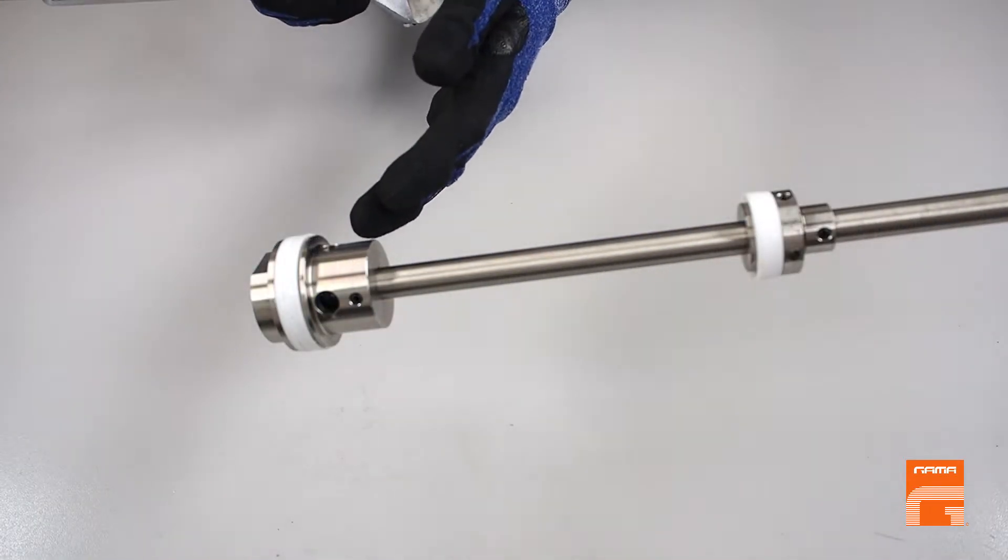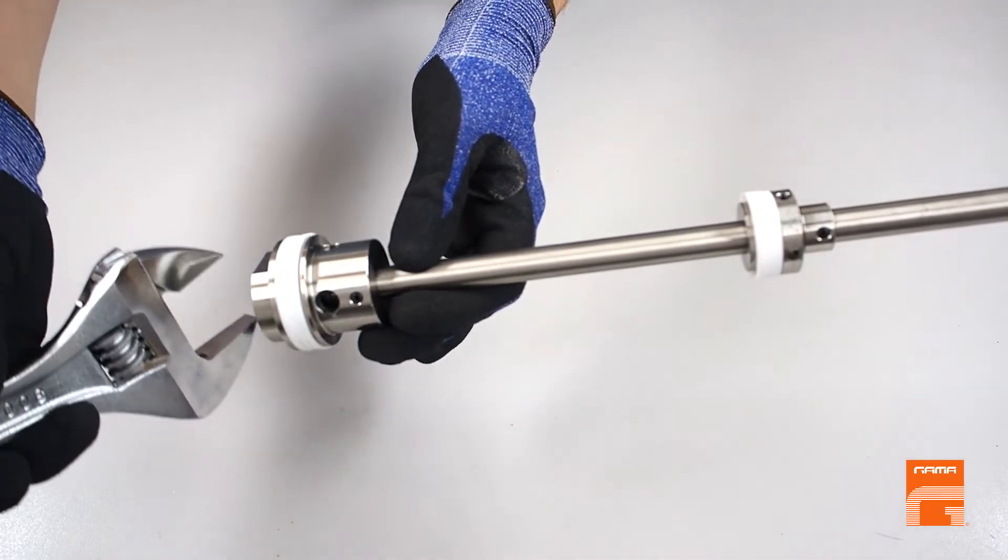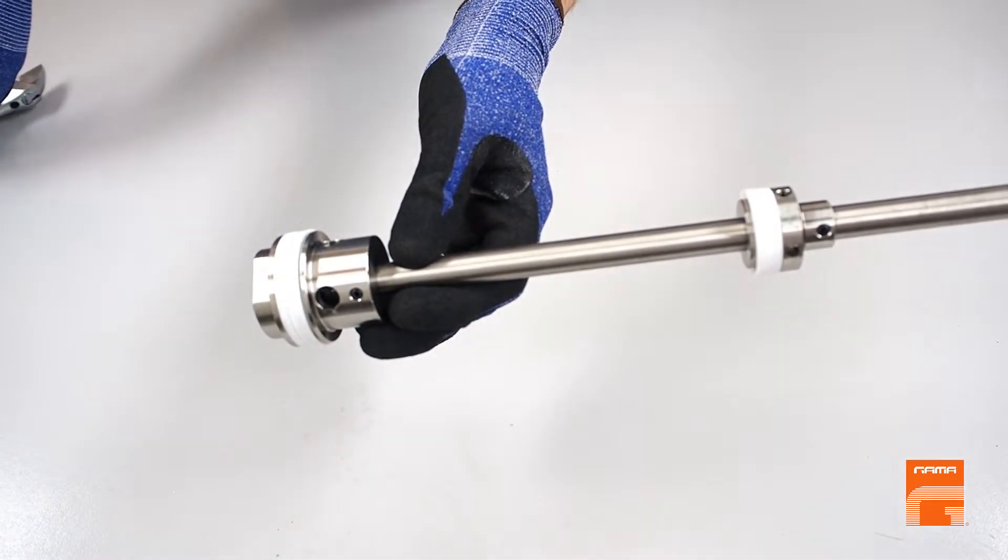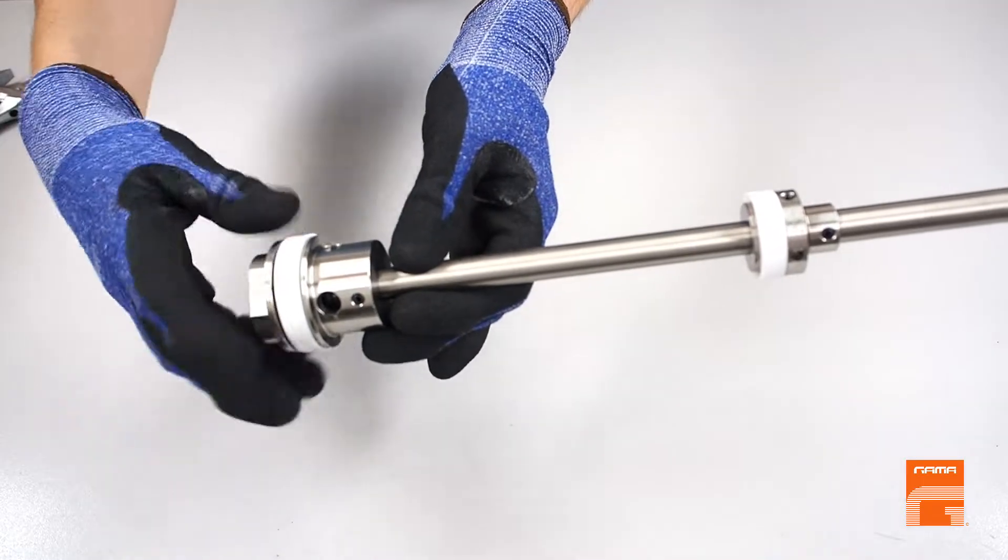Let's start with the bigger one. You should fix the rod in the vise and then, using the adjustable wrench, unscrew the bottom part.